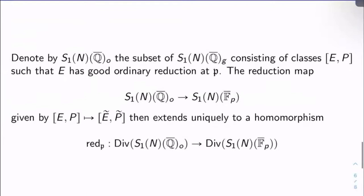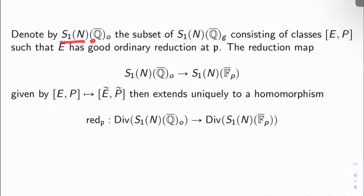So let's let S₁(N)(Q̄)_O be the subset of S₁(N)(Q̄)_G, consisting of classes of enhanced elliptic curves [E, P], such that E has good ordinary reduction at ℘. So remember G just meant good reduction at ℘. So O will be the subset of elliptic curves with good ordinary reduction at ℘. So we want non-trivial p-torsion in the reduction curve.